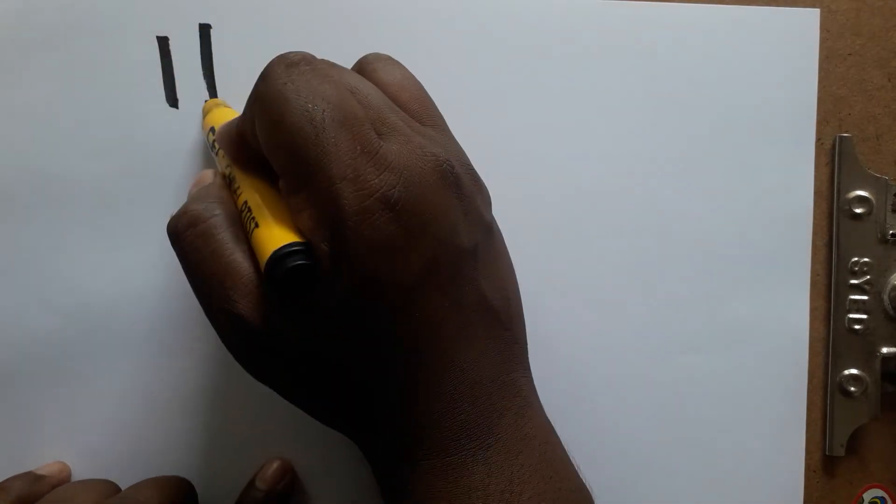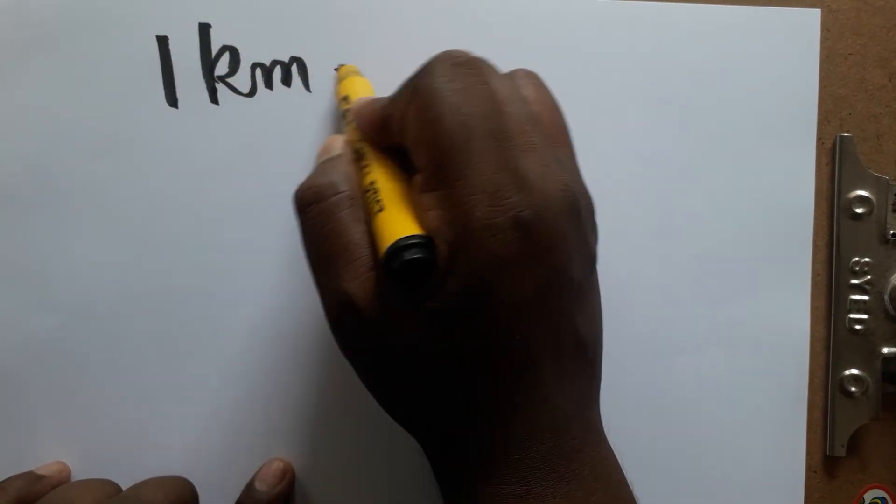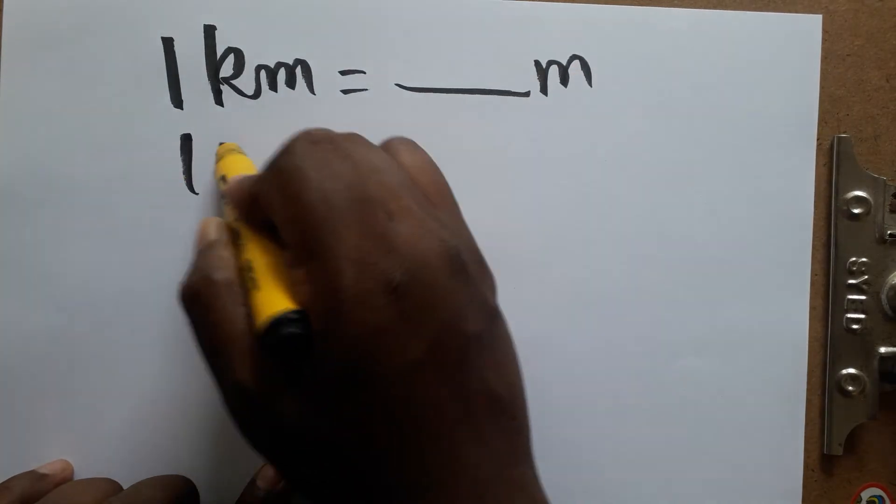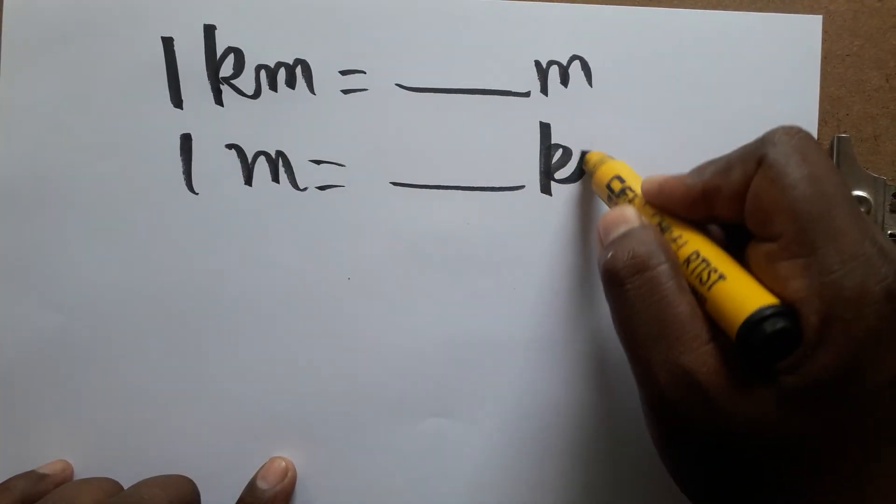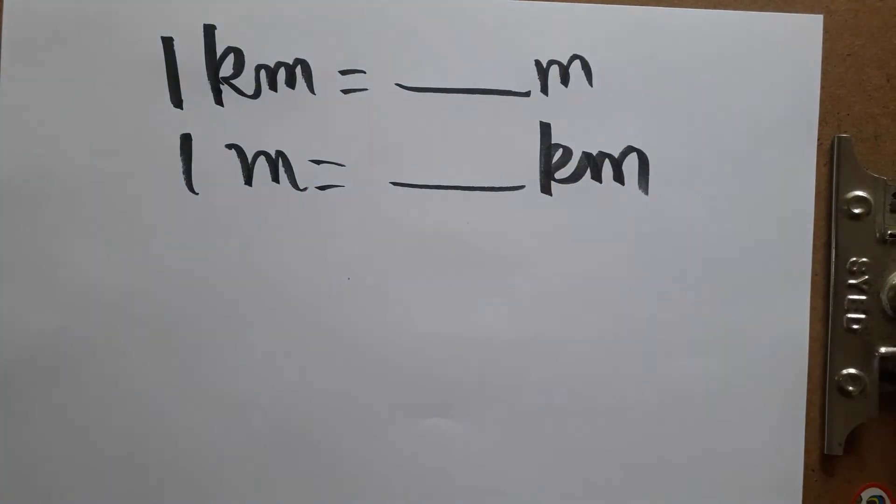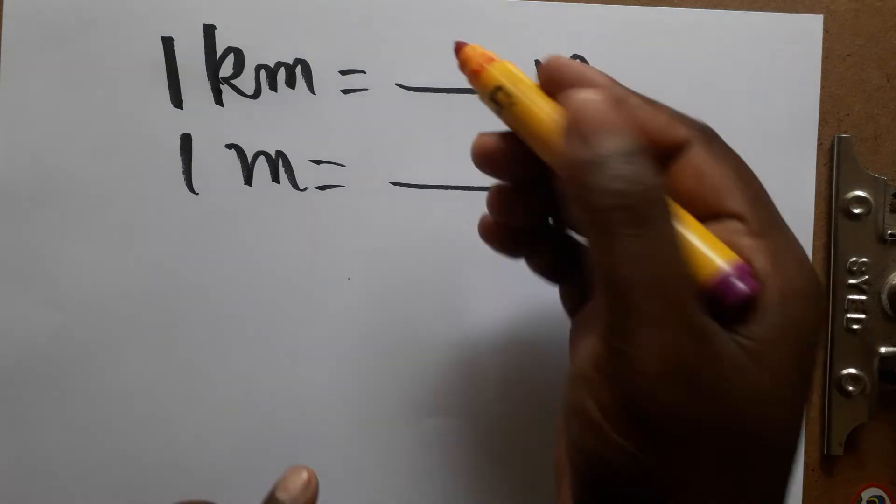Hello student, today we are going to learn: one kilometer is equal to how many meters, and one meter is equal to how many kilometers. If you like my channel please subscribe. See here, one kilometer is a thousand meters.